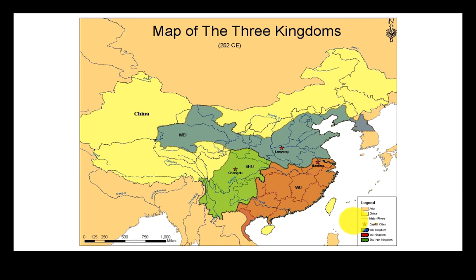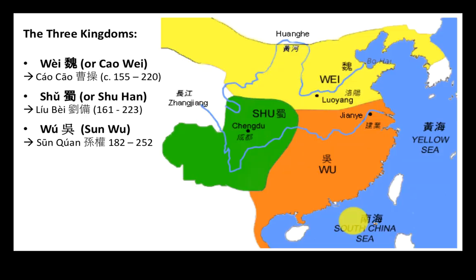Here we have a map of today's China in yellow, and superimposed on that is a slightly smaller map of our three kingdoms — how they stood at the end of the Three Kingdoms period, when all three kingdoms had been founded. We have the Wei Kingdom, or Cao Wei, in the north, usually associated with Cao Cao, who is one of the main characters in our novel. He is a name you absolutely have to remember — one of our main protagonists.